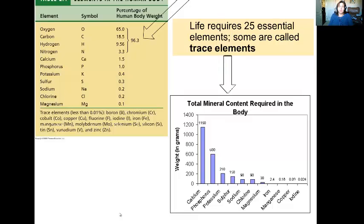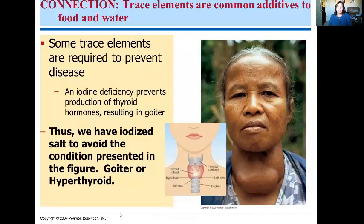Trace elements refer to minerals mostly that we just need a little bit of in our body. But not having them can lead to some devastating health effects. So let's take a look at some examples of those. This is the first example, and it has to do with the element iodine. If you don't have iodine in your diet, that can lead to what's called a goiter or hyperthyroidism, because iodine is required to make thyroid hormone.